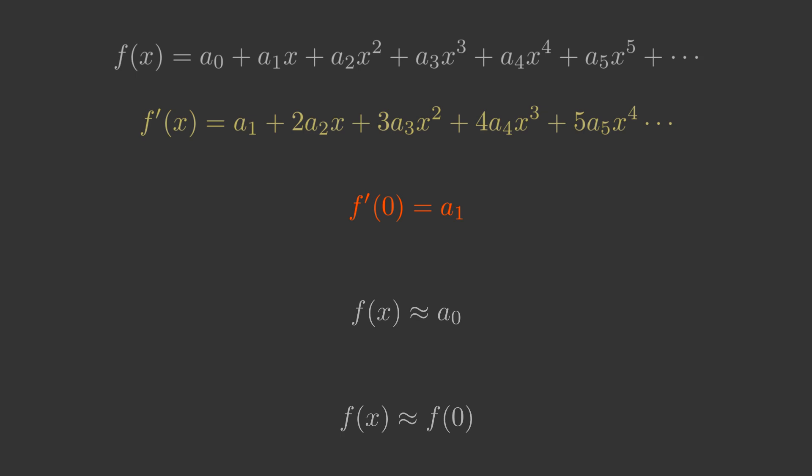We now know the value of a0 and a1, so we can approximate f of x as a0 plus a1 times x. Substituting the known values for a0 and a1 gives f of 0 plus f prime 0 times x.